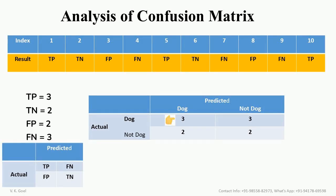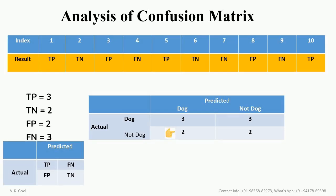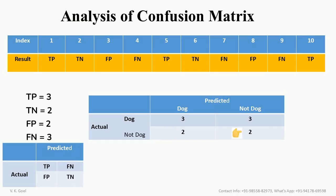Now, what does a confusion matrix say? TP equal to 3 indicates that 3 actual dogs were correctly predicted as dogs. While FN equal to 3 means that 3 actual dogs were predicted as not dogs. Therefore, this is the area where the classifier needs to be corrected. Similarly, FP equal to 2 indicates that 2 not-dog cases were predicted as dog. And finally, TN equal to 2 indicates that 2 not-dog cases were predicted as not dog.